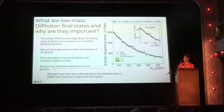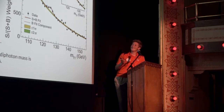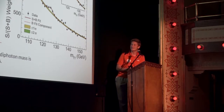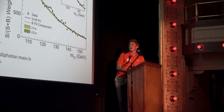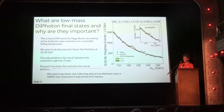CMS takes pictures of the Large Hadron Collider and gives lots and lots of data every second. Low-mass diphoton final states were what I was interested in. Diphoton means two photons, final states refers to after the collision, and low mass is low mass.